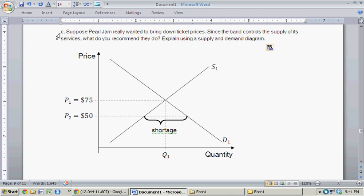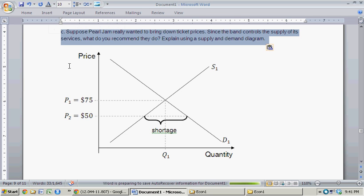Okay, so now moving to part C. Suppose Pearl Jam really did want to bring down their ticket prices. Since the band is actually in control of supply, I sort of assumed that there was this upward sloping supply curve, but they're actually in control of the supply of the services. What do you recommend that they do? And explain using a supply and demand diagram. So first off, let me clean this up with the price floor or price ceiling we had before.